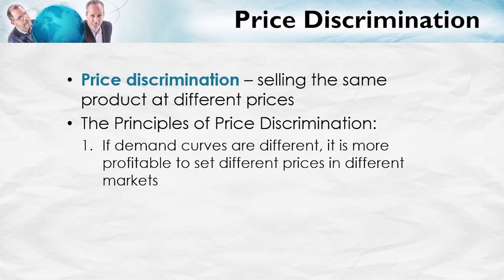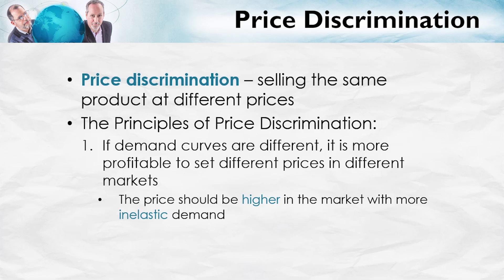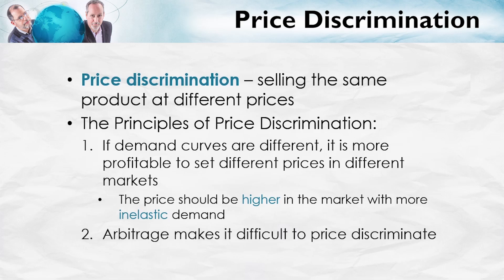So let's briefly review. Price discrimination is selling the same product to different groups of buyers at different prices. Here are some basic principles. First, if the demand curves across two markets are different, it's more profitable to segment those markets and set different prices — higher in the market with the more inelastic demand. Second, arbitrage across markets makes it more difficult to price discriminate. Arbitrage most simply means buying low and selling high: buying low in one market, moving goods to a second market, and reselling them at a higher price. This brings prices in both markets closer together. To practice price discrimination successfully, the monopolist has to prevent that kind of arbitrage.